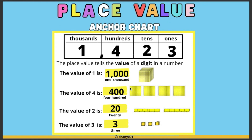This is the anchor chart for the week using the number 1,423. Place value tells the value of a digit in a number. The value of 1 is one thousand. The value of 4 is four hundred. The value of 2 is twenty. The value of 3 is three.